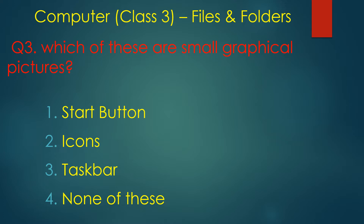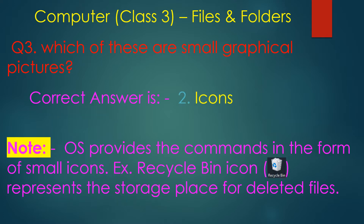Which of these are small graphical images? The answer is icon. The operating system provides commands in the form of small icons. For example, the recycle bin symbol — this is called an icon. It represents the storage place of deleted files.